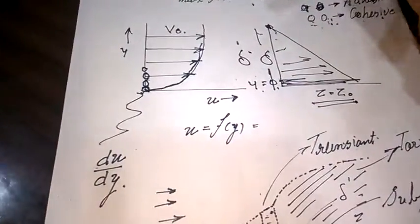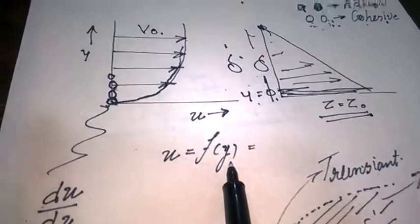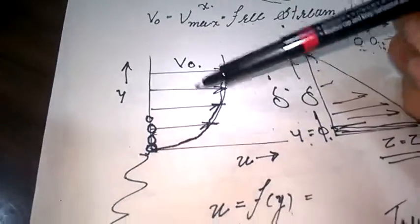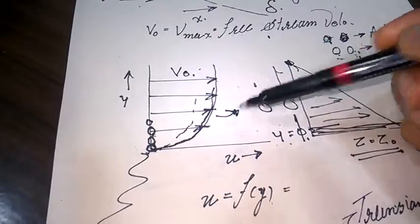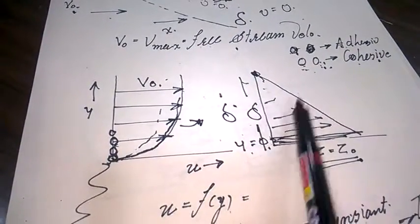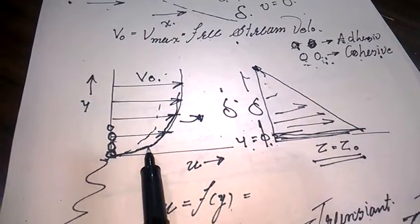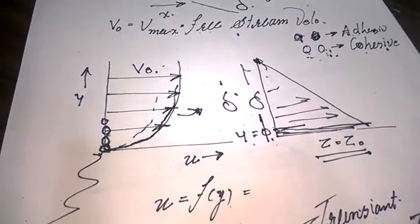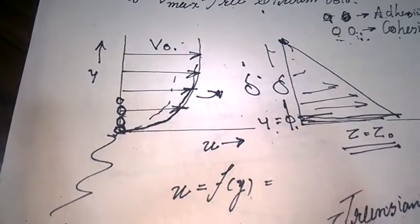The velocity u is a function of y, meaning the velocity at any point is a function of the vertical direction y. The velocity gradually increases and the shape is parabolic. The differentiation of the velocity gradient gives you the shear force — that is Newton's law of viscosity.